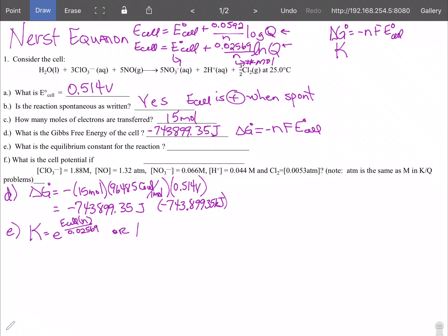Or we could do it with K is equal to 10 to the E cell times n over 0.0592. What's the difference, one is a base 10 that would be the 10 and one is based upon the natural log which is second so that's the e. The easiest thing is to go ahead and plug in your numbers, remember we have E cell to be e to the 0.514 times 15 divided by 0.02569 which translates to e to the 300.1168.